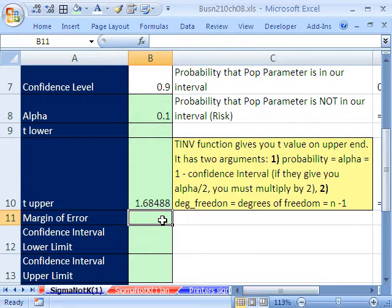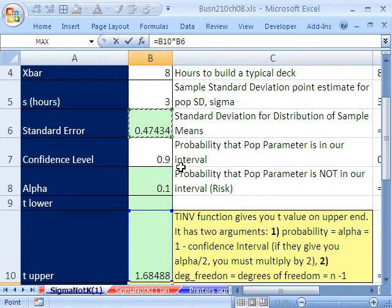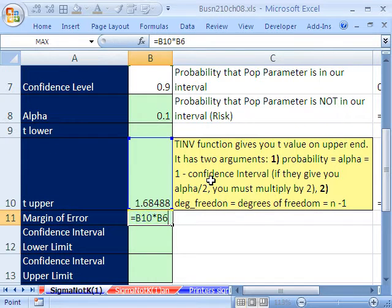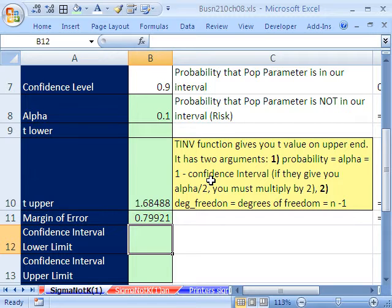The margin of error is simply whatever our t is times our standard error. There's our margin of error. That's the slop on either side of our x-bar so we get an interval. We can say between these two, we're 90% sure that our population mean will occur.